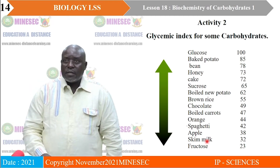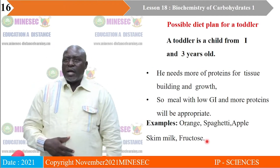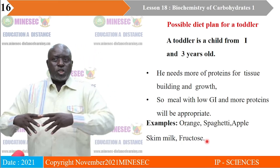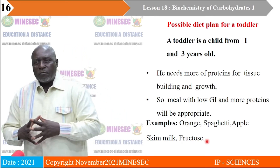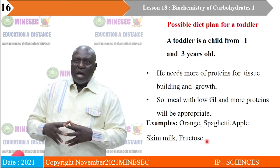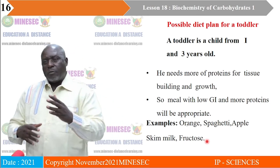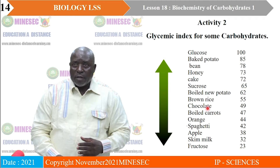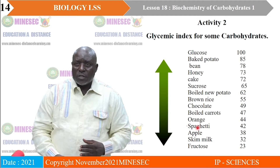The possible diet plan for a toddler: a child aged 1 to 3 years needs more proteins for tissue building and growth. It does not need high carbohydrates because it is not doing strenuous work. The meal of that child must be with low glycemic level and more proteins. Suggested meals come from the low glycemic range — from orange down to fructose.